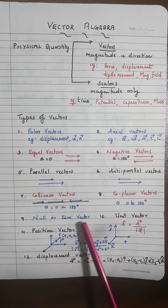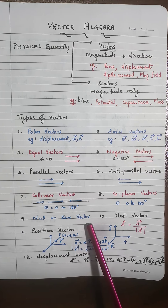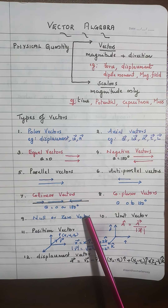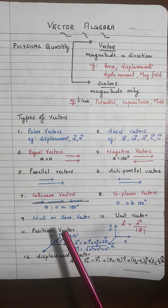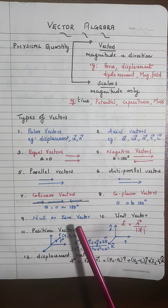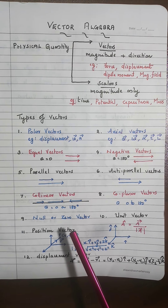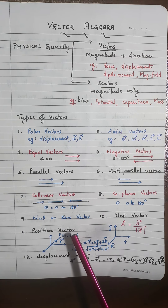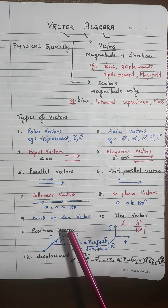The null or zero vector: a best example is if a body moves around the circumference of a circle and returns to its original position, its displacement becomes zero. That is the null vector — magnitude is zero.